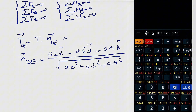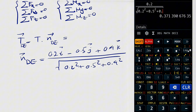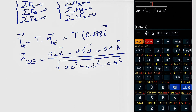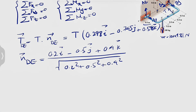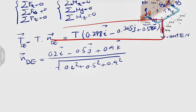Computing the unit vector: the denominator is √(0.2² + 0.5² + 0.4²). Dividing each component gives us: X component = 0.298i, Y component = −0.745j, and Z component = +0.596k. So the tension vector in the cable is T × (0.298i − 0.745j + 0.596k), where T is the unknown magnitude.